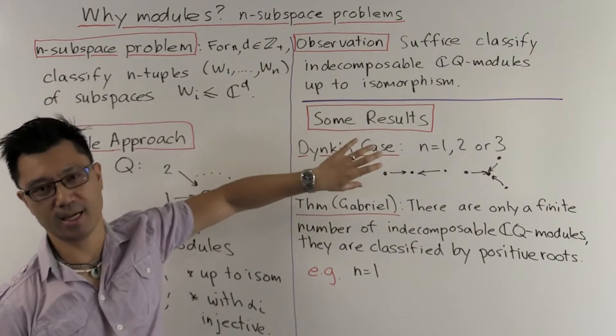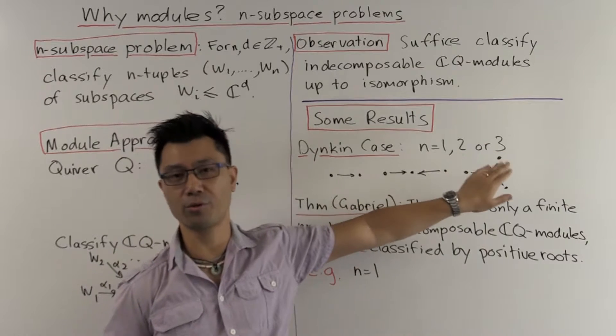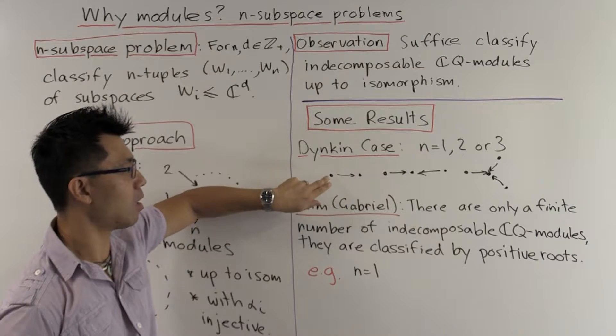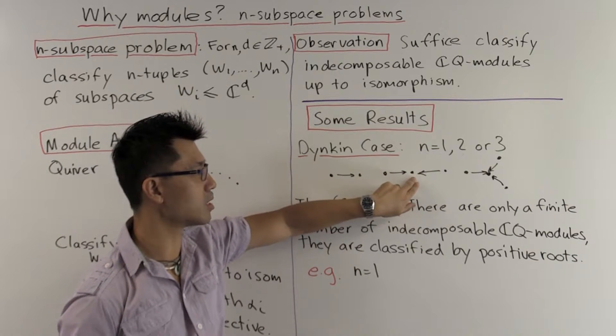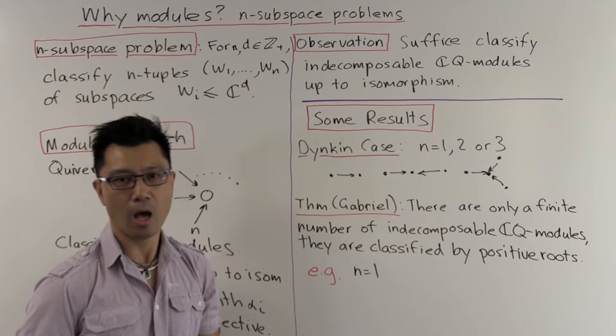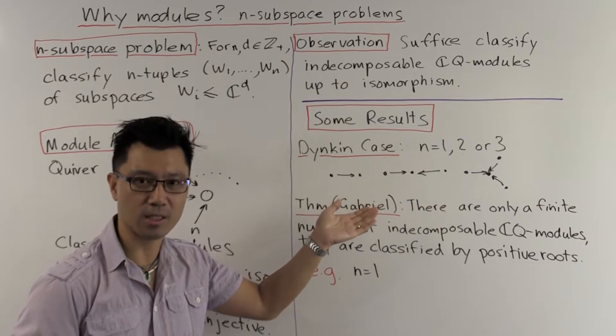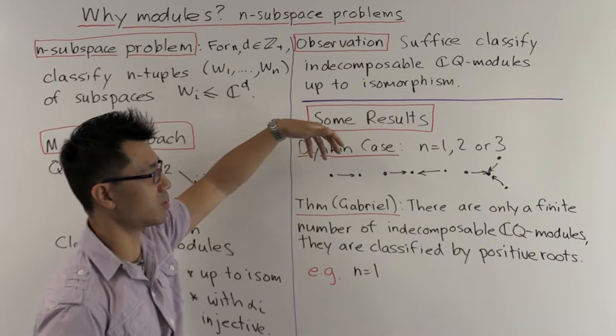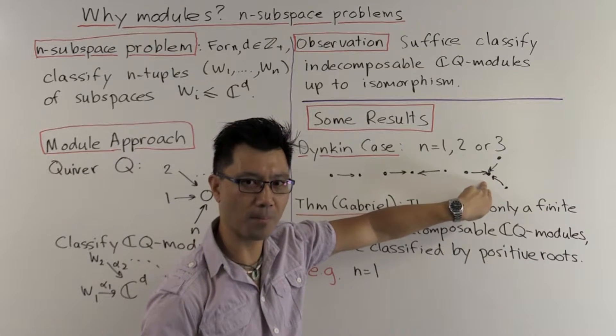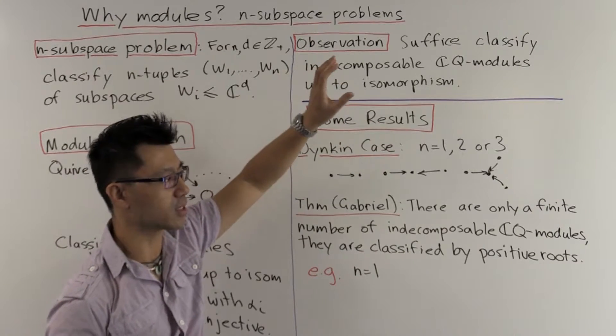So what I want to do now is just to present some of the results concerning this problem. It's an extremely difficult problem, even though it's just a problem in linear algebra. The simplest case is called the Dynkin case, and that occurs when n, the number of subspaces, is 1, 2, or 3. In the case n equals 1, you have a 0 and a 1 mapping to the 0. In the case n equals 2, the 0 is in the middle, and you have 2 vertices outside mapping to it. In the case n equals 3, you have a 0 and 3 vertices on the outside mapping to it. These are very special types of quivers called Dynkin quivers. This one corresponds to A2, this is A3, and this is D4.